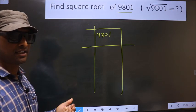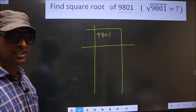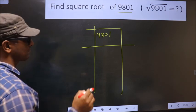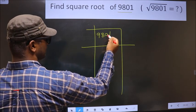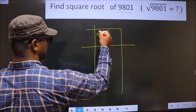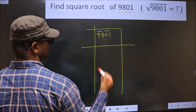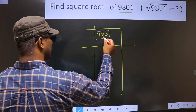Okay, next. Now we should divide the given number into pairs, starting from this side. These two numbers one pair and these two numbers another pair. Here we have 98.